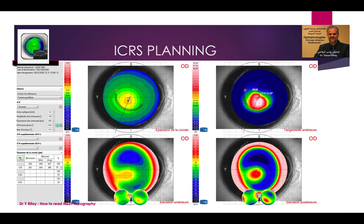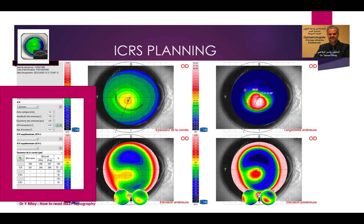There is a model for ICRS planning — intracorneal ring segment implantation. The device will not give you the plan directly, but it will help you. It gives you the axis of the coma. You choose the axis of the coma or the axis of the astigmatism. It provides the safety limits of thickness. The surgeon will then choose the optical zone of the ring and the length of the ring. So the device helps you with these parameters.